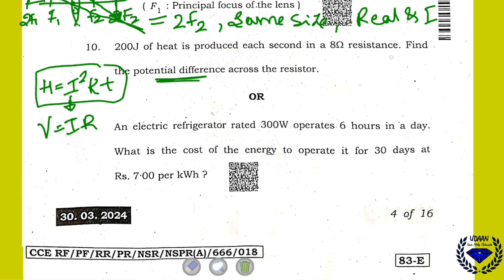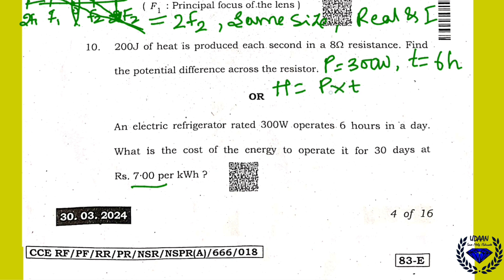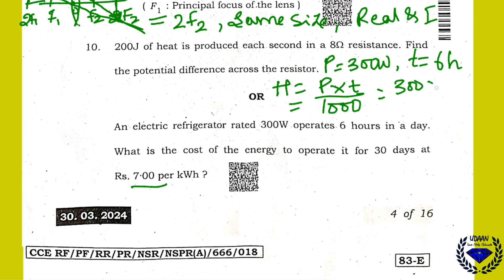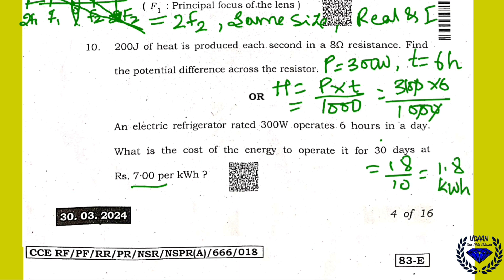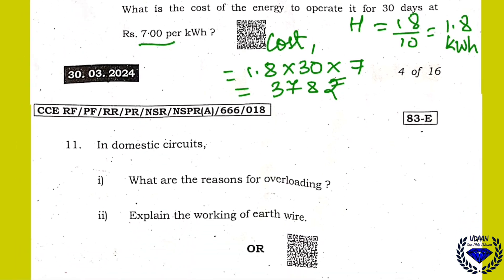An electric refrigerator rated 300 watts is used for 6 hours in a day. What is the cost of energy to operate it for 30 days at rupees 7 per kilowatt-hour? Energy = 300/1000 × 6 = 1.8 kilowatt-hour per day. Cost = 1.8 × 30 × 7 = rupees 378. So the answer is rupees 378.